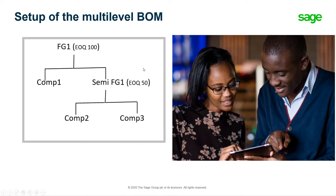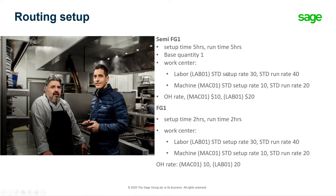I have a multi-level BOM. The finished good has an EOQ of 100, and it has a component and a semi-finished good which has an EOQ of 50. The semi-finished good has two components: component 2 and 3. For this semi-finished good, the setup time is five hours and runtime is also five hours, and the base quantity is one. For the work center, I have a labor and a machine — the labor has a standard setup rate of 30 and run rate of 40.